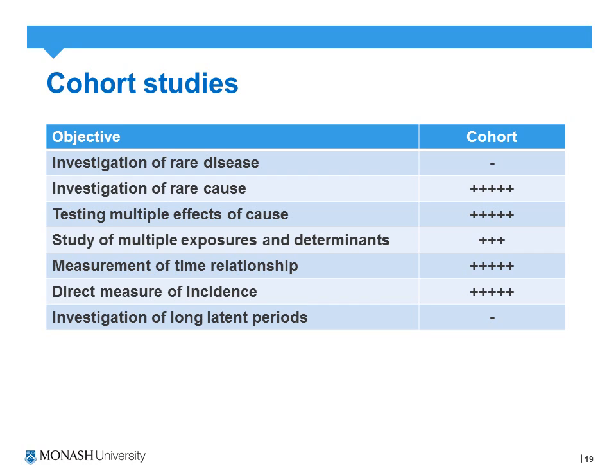Finally, to summarise the strengths and weaknesses of cohort studies: investigating rare diseases is a weakness, but cohort studies are strong for investigating rare causes, testing multiple effects of causes, identifying the temporal relationship between cause and effect, and directly measuring the incidence of a particular disease.